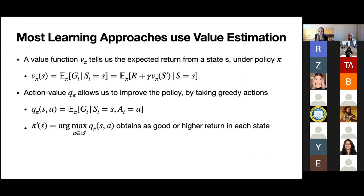Central to most reinforcement learning algorithms is value estimation — trying to estimate this expected return into the future. The value function V-pi tells us the expected return from a state S if you follow policy pi. From a state there's stochasticity in the environment, so the agent reasons about the expected return it could receive. Value functions can be written recursively: the value equals the immediate reward plus gamma times the value in the next state. This recursion is called the Bellman equation, and many algorithms are built on it, using our own estimates to fill in parts of this return.